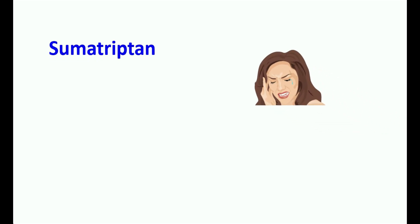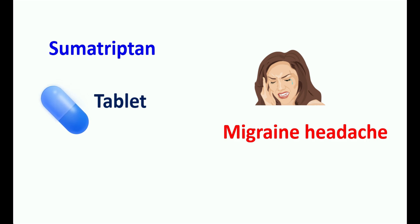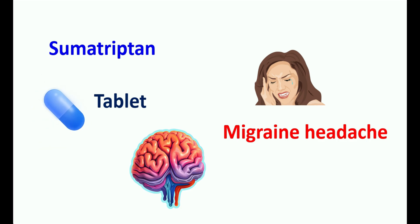Sumatriptone is one of the medications used to treat migraine headache. It can be used in the management of acute attacks of migraine associated with headache or cluster headache. This medication is available as a tablet for ease of administration, and it is also available as a nasal spray and even a subcutaneous injection. Sumatriptone can produce constriction of cranial blood vessels.